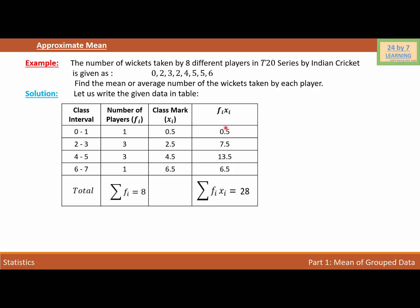We add all those numbers and get 28. Now let's find the mean. The mean is given by x̄ = (Σ xi·fi) / (Σ fi). Since Σfixi = 28 and Σfi = 8, we write x̄ = 28/8.